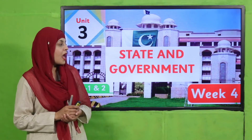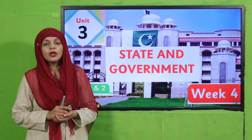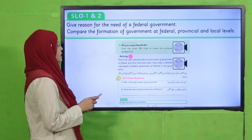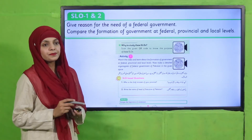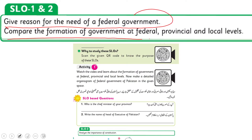We are on Week Number Four. So let's quickly discuss the first SLO. SLO Number One and Two states: give reasons for the need of a federal government, and compare the formation of government at federal, provincial, and local levels.